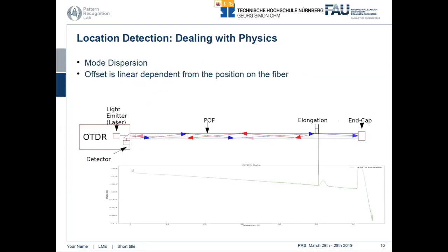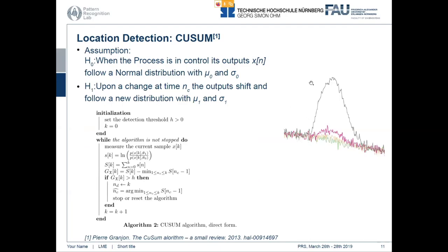When you think of detecting those little peaks, the most simple approach you can think of is a very old algorithm, the CUSUM algorithm. If you have a process and this process is in control, it emits data that follow a normal distribution, which is mostly true for our data. When everything is okay, we have measured data with a certain mean and standard deviation. Once we disrupt this process, the mean and standard deviation change. This algorithm calculates the conditional likelihood of our measurements regarding those two distributions and sums the results up over time. Once we hit a certain threshold, it's time to ring the bell.